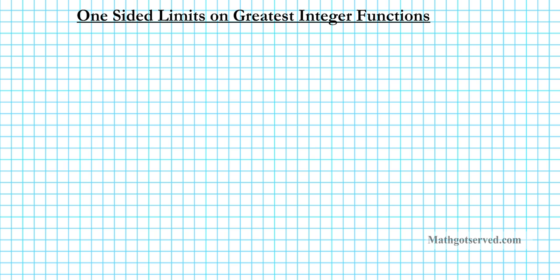Good day students. In this clip we're going to be going over four examples on how to calculate one-sided limits on greatest integer functions. Before we get started, we're going to take a look at some basic review concepts that you have to have in mind.